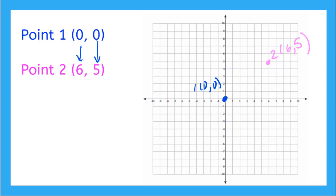Let's find the distance between the two x-coordinates. Point 1 is over here at 0, and my x-coordinate on point 2 is all the way over here at 6, so the distance between our two x-coordinates is 6. Now what's the distance between our y-coordinates? Point 1 is at 0 and point 2 is up at 5, so I have a distance of 5.